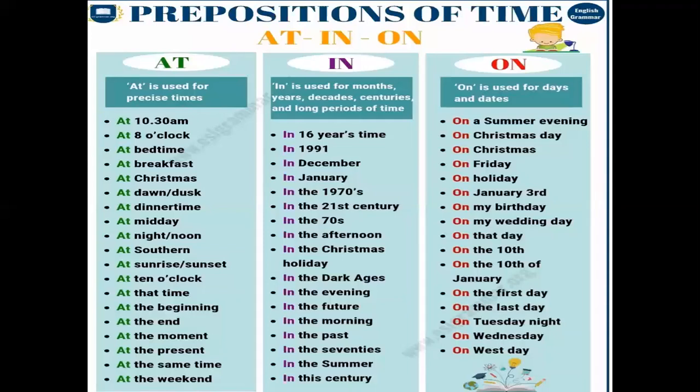'On' is used for days, dates, and festivals. For example: 'he comes here on Monday' — Monday is a day. 'Makar Sankranti falls on 14th January' — that is a date. For a given or specific time: 'he finishes his work on time,' 'this money is payable on demand' — meaning not later.